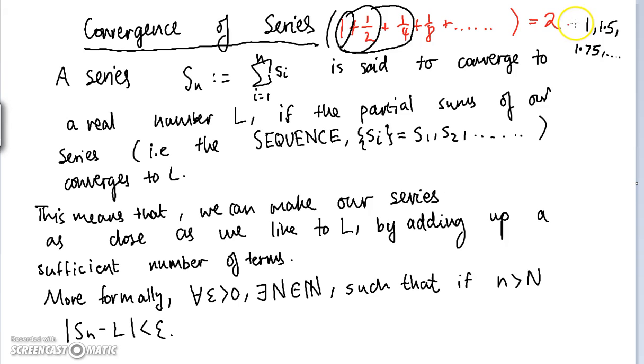What it means for a series to converge is that the sequence of partial sums of the series—adding only the first term, adding the first two terms of the series, adding the first three terms of the series—if these numbers get closer and closer to some number, then we say the series converges.